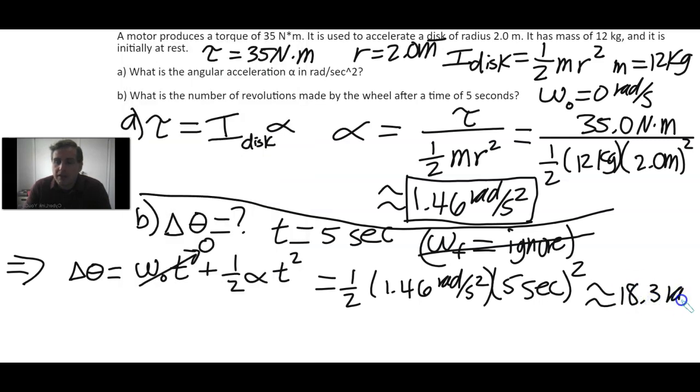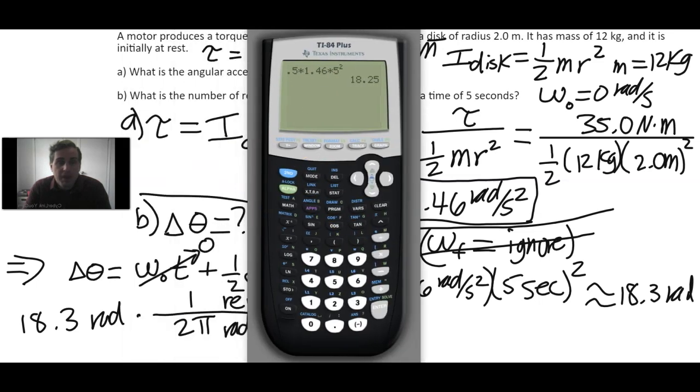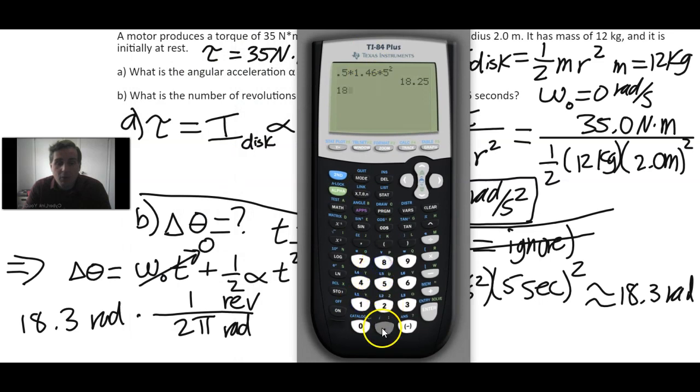We're not quite done because that's the angular displacement in radians. We need to get that in revolutions. When we convert from radians to revolutions, we recall that for every one revolution, there's exactly 2π radians. In the calculator, you need to make sure you do 18.3 divided by parenthesis 2 times π. Without a parenthesis, the calculator would divide by 2 then multiply by π, which is incorrect. Be careful with order of operations. So we get about 2.91 revolutions.